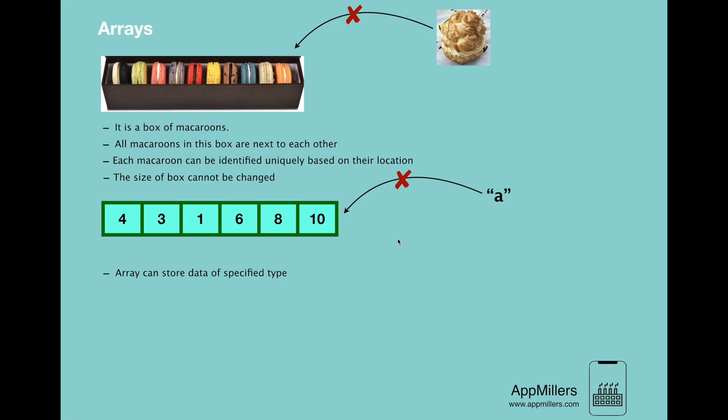Once you have defined the type of data for array, the elements must be the same type of the data that we defined. Let's continue to next property. The next property is elements of array are located in contiguous location in memory.